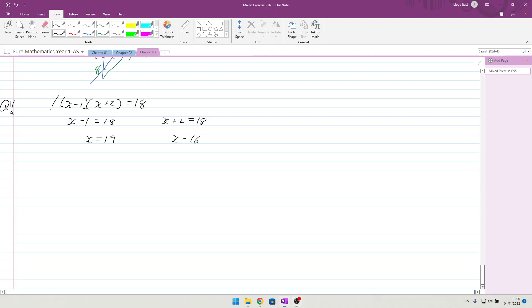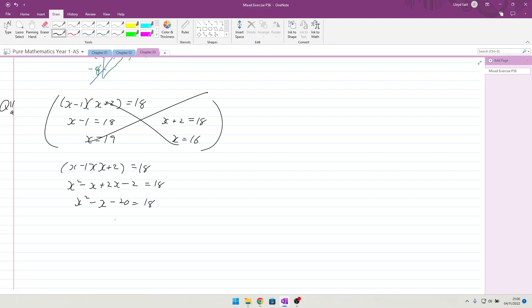Of course you cannot do that, it's complete and utter gobbledygook. What we need to do is take x minus 1 and x plus 2, multiply it out. We end up with x squared minus x plus 2x minus 2 equals 18. So we get x squared plus x minus 20 equals 0. When you solve them, you get x equals minus 4 and x equals 5.